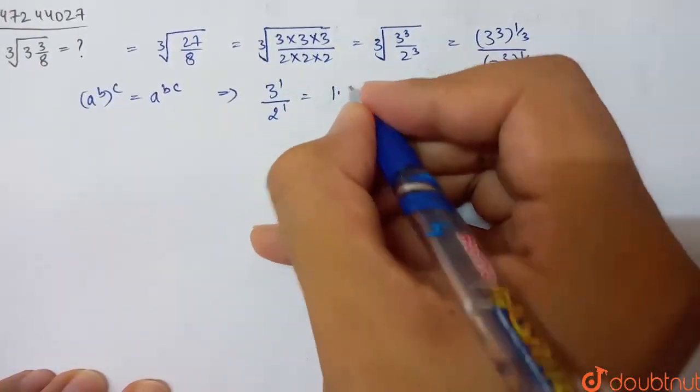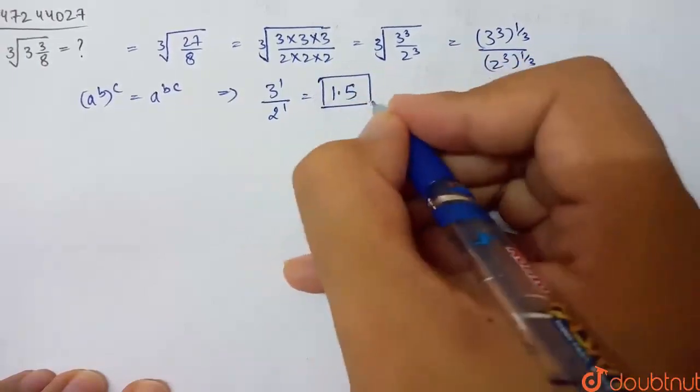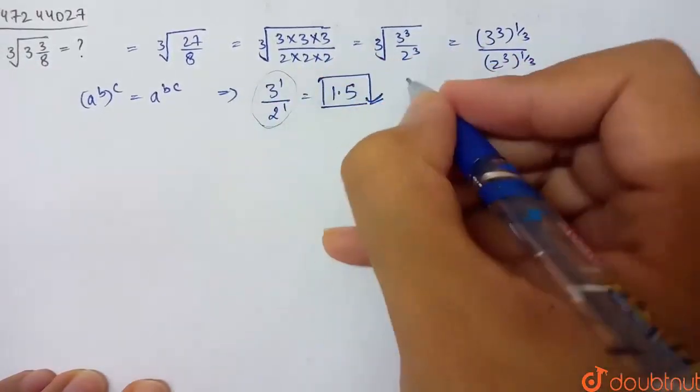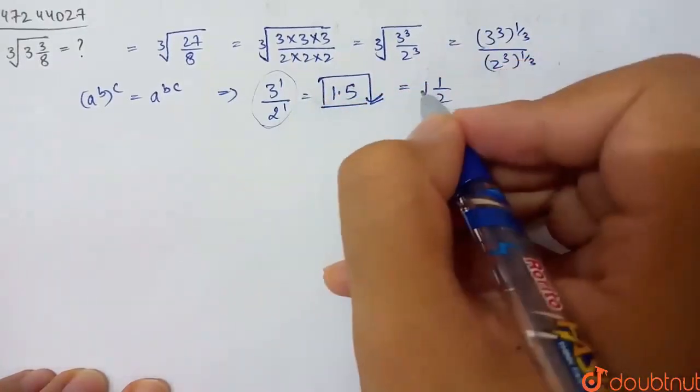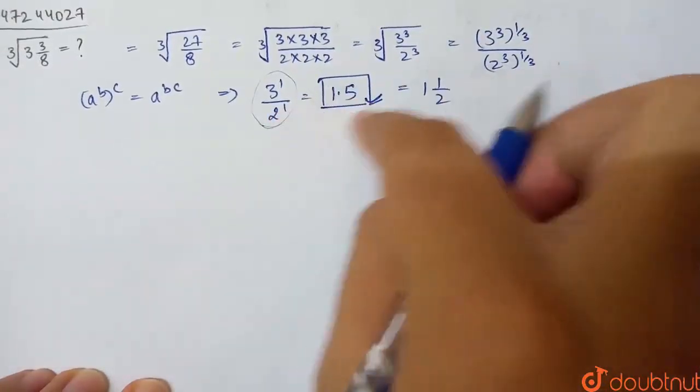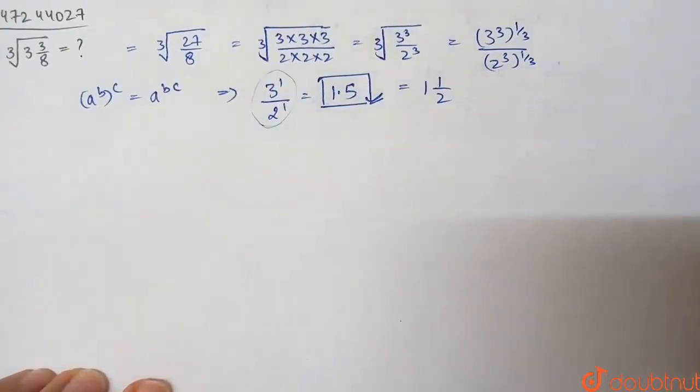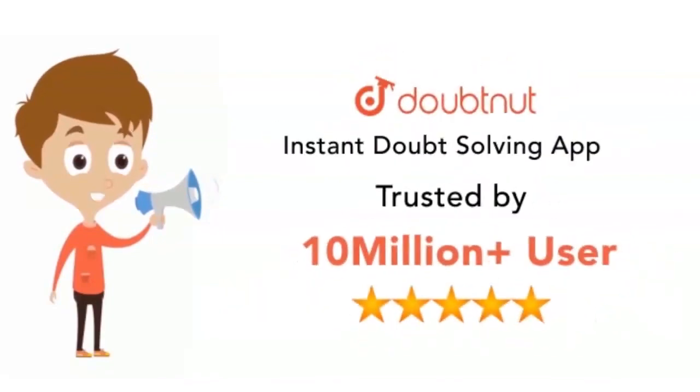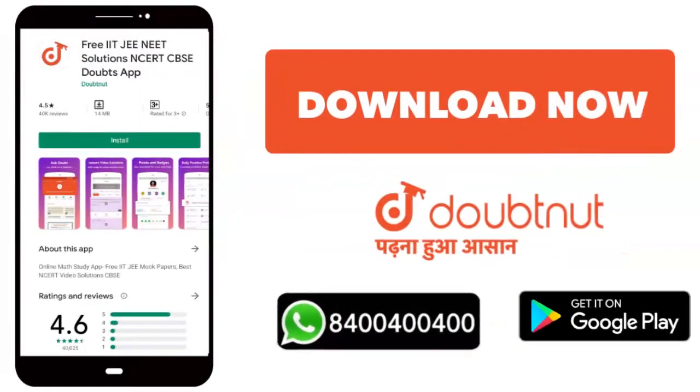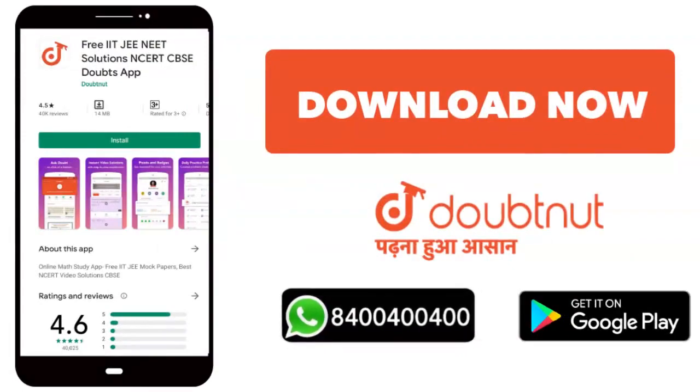So what do we have to do? 1.5. So this is our required answer. Or 3 by 2 can write it, or it can be 1 and 1 by 2. So in any form we can represent it: 3 by 2, 1.5, or 1 and 1 by 2.